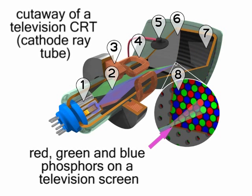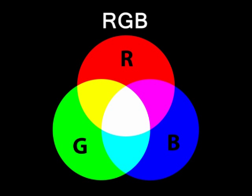Up through the beginning of the 21st century, additive color systems used a combination of red, green, and blue to create color images. This additive color system is known as RGB.